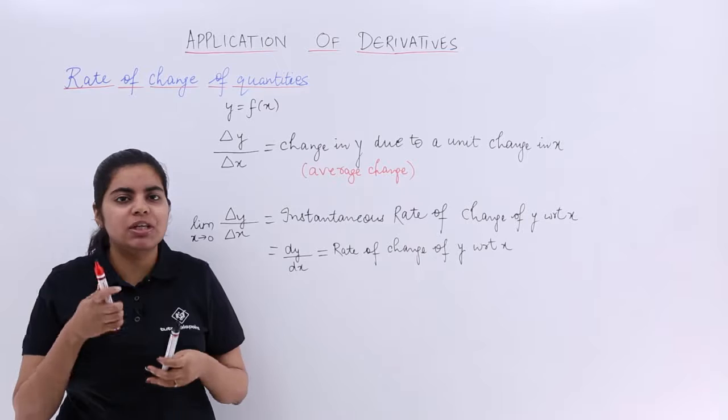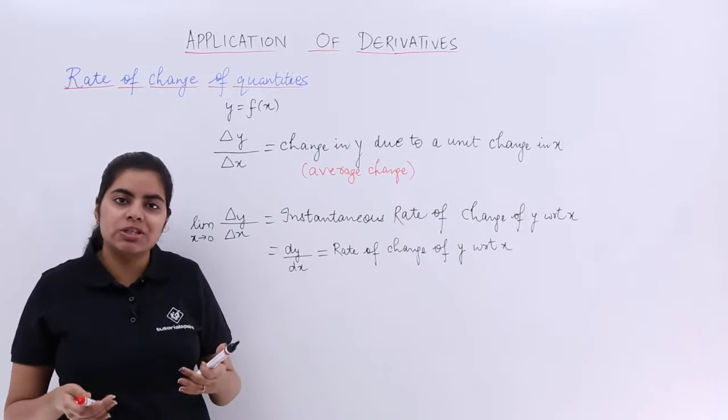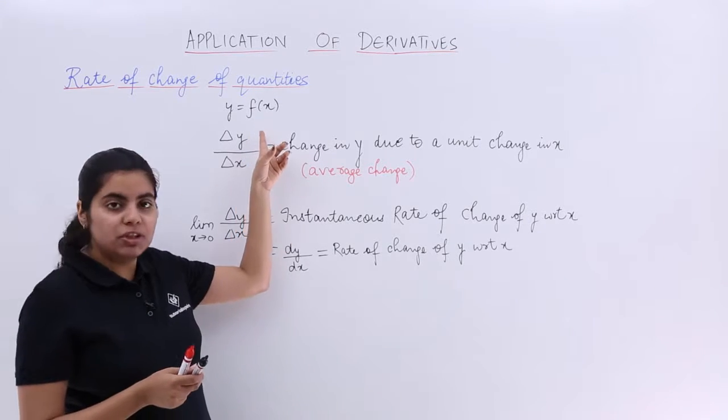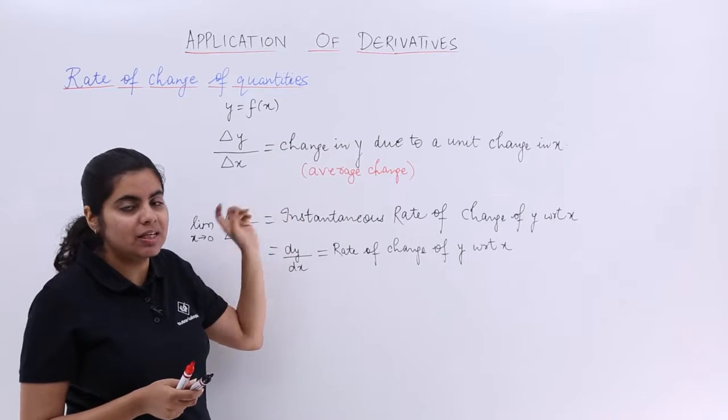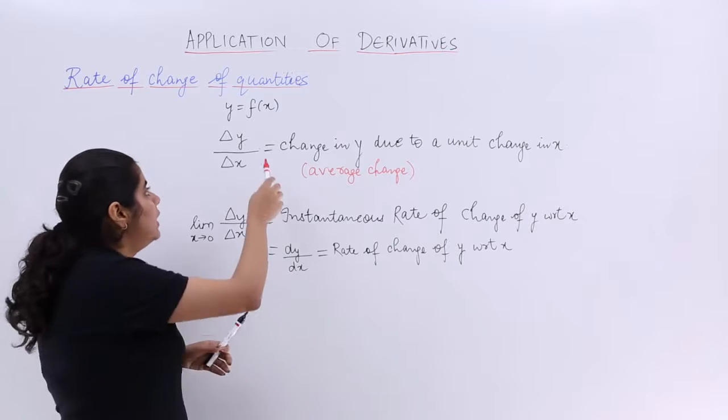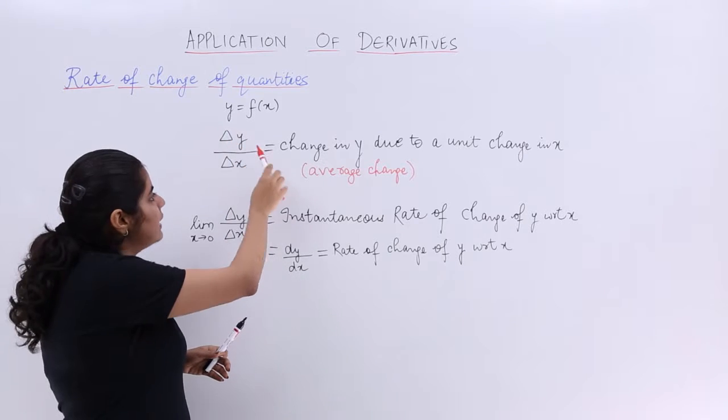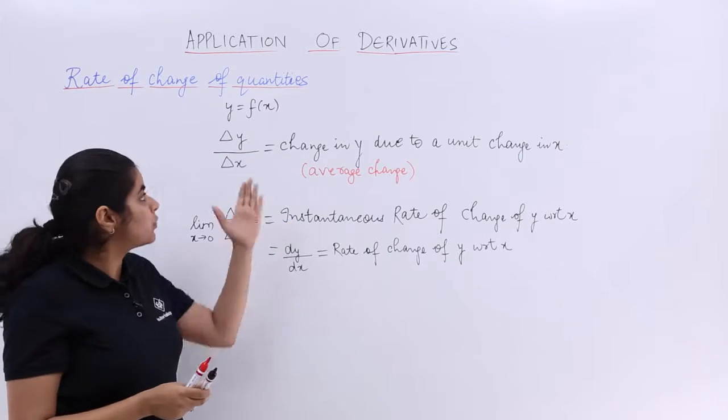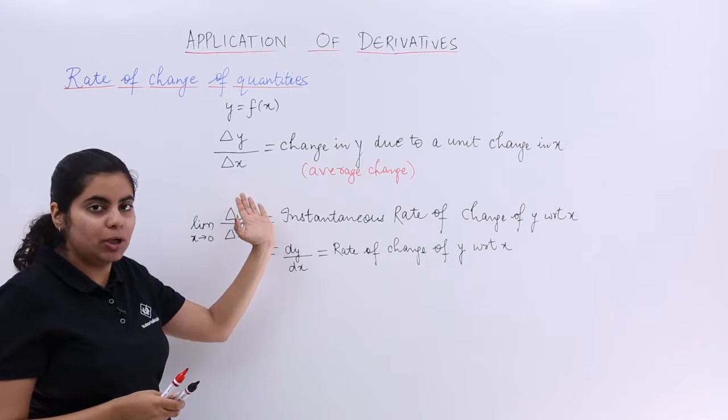And a small change in y or a change in x can be denoted by del y with the change in y with respect to x, we say del x. So whenever you see del y upon del x, that is nothing but the change in y due to the unit change in x.